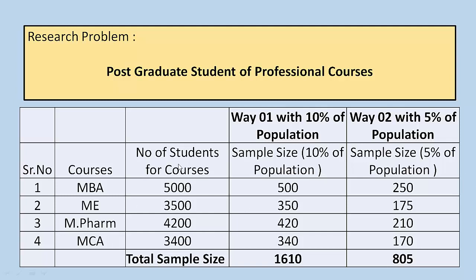In the third column we mention the population size of the respective courses. For MBA, the total number of students is 5000. For ME, total students are 3500. For MFARM, total students are 4200. For MCA, total students are 3400. These numbers represent the respective population for each course. Now we want to find out how we can select a sample from the total available population.